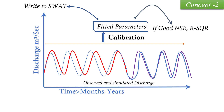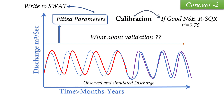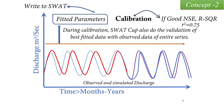In calibration, we will see fitted parameters. Those fitted parameters can be compared with the observed data at any stage or any part of the time series. We have one advantage here because we have more calibration data, which means we have more chances to get better fitted parameters. During calibration, SWAT-CUP also does the validation of the best fitted data with the observed data of the entire series.